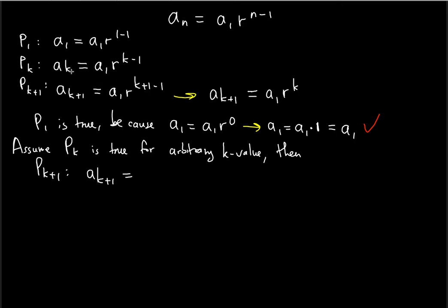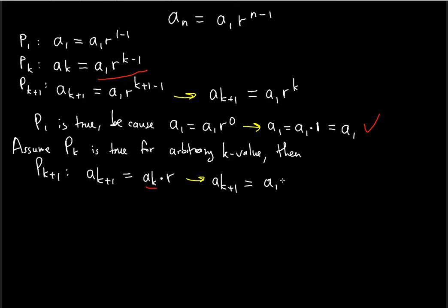The given term is a_k, and the next term is a_{k+1}, so you must multiply by r. We can write this as a_{k+1} is equal to a_k multiplied by r, because multiplying by r gives you the next term in the geometric sequence. Now we can rewrite the left side: a_{k+1} equals — and we substitute a_k with its right side from Pk — so we write it as a_1 times r to the k minus 1, and we still multiply by r.